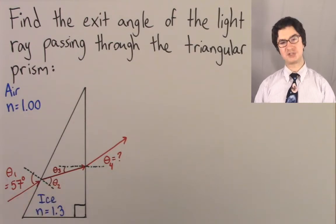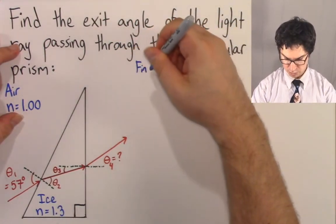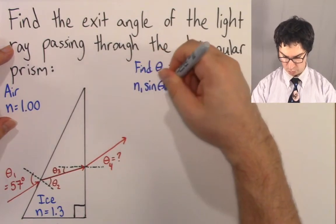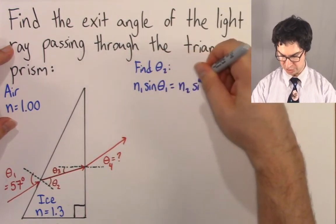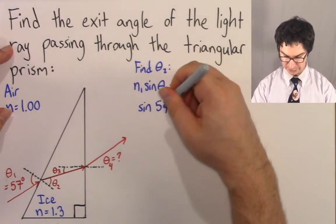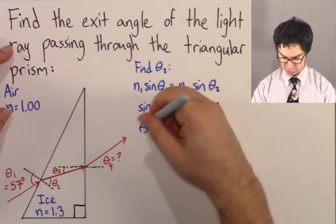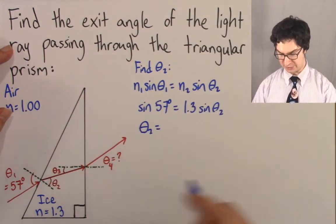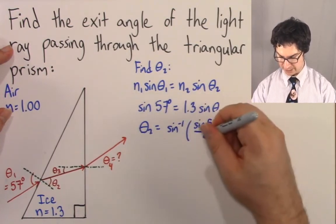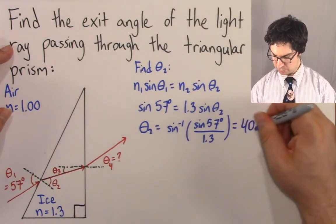Let's first find theta 2. That's a simple application of Snell's Law: N1 times sine of theta 1 equals N2 times sine of theta 2. N1 is 1, so sine of theta 1 at 57 degrees equals N2, which is 1.3 for ice, times sine of theta 2. Theta 2 therefore equals the sine inverse of sine 57 degrees divided by 1.3, which gives you theta 2 equal to 40.2 degrees.